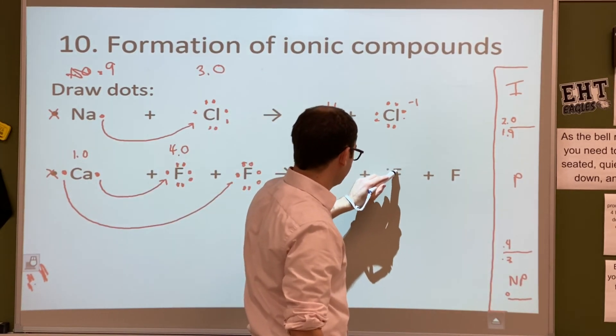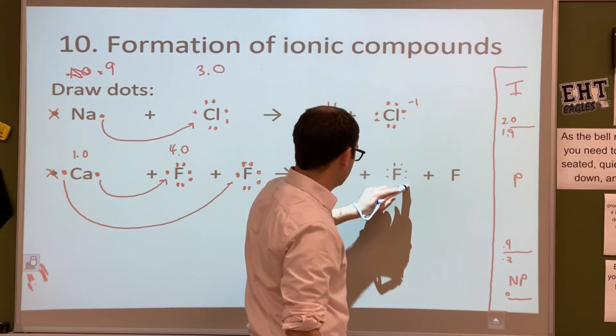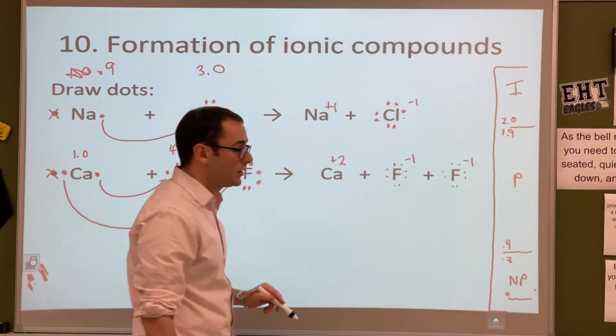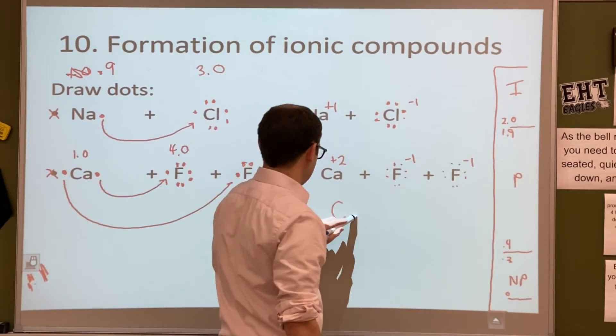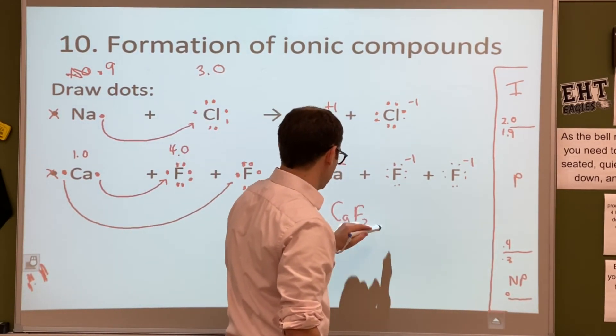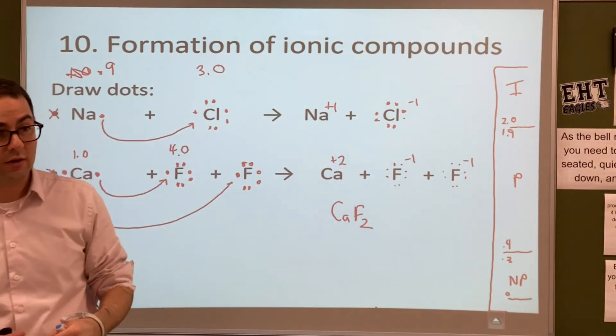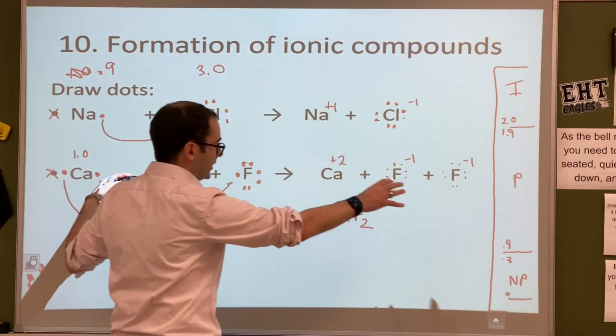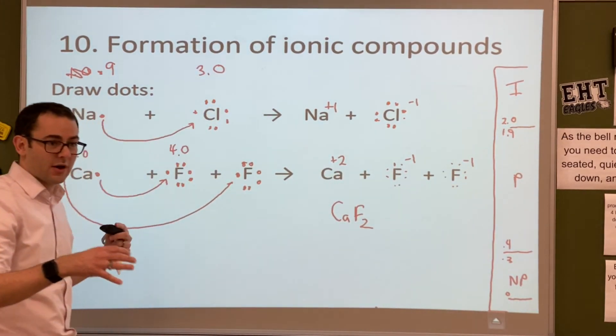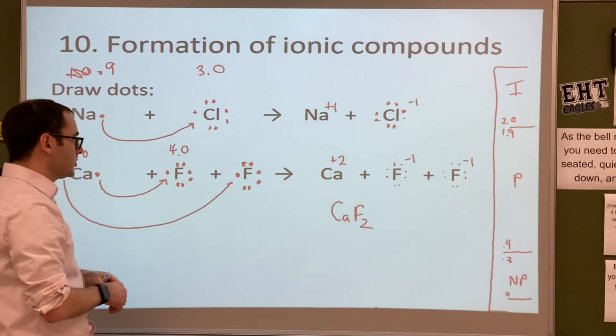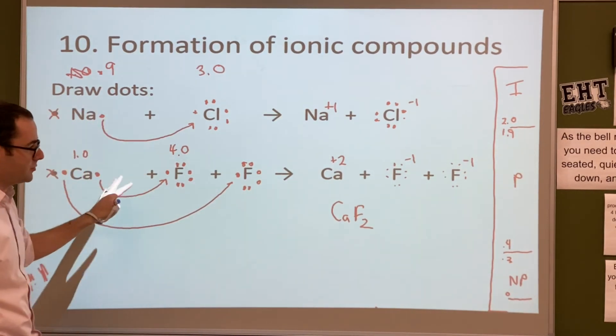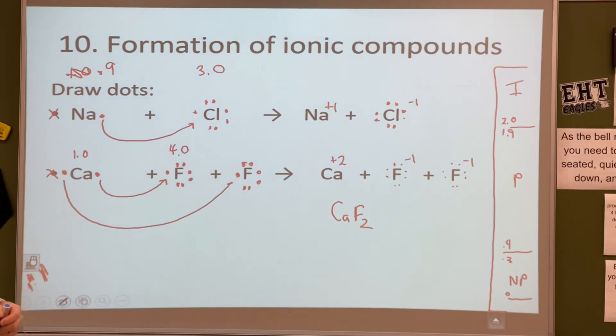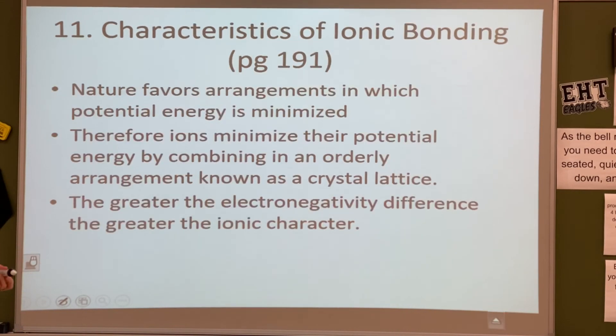Alright? Fluorine's going to become? Minus 1. There's 2 of them. What would the formula look like for this? Good. CaF2. And what would the name of this be? Yeah, calcium fluoride, right? So we've kind of already done some of this stuff when we talked about nomenclature, right? So now we're just kind of looking at where the electrons are moving, specifically, for these problems. Alright? Any questions with that? The ionic. Yeah? Okay.